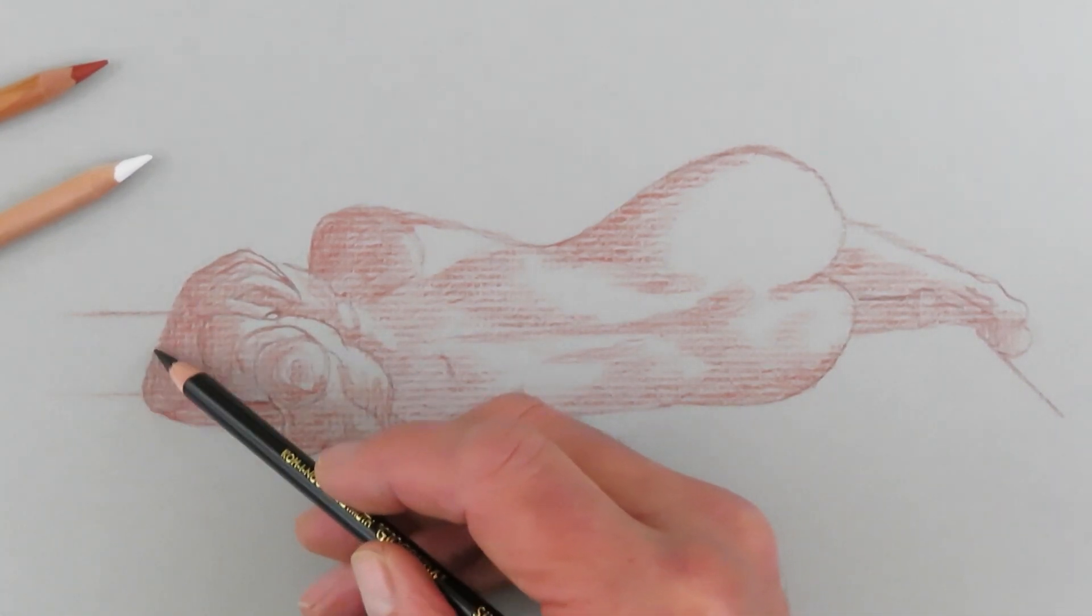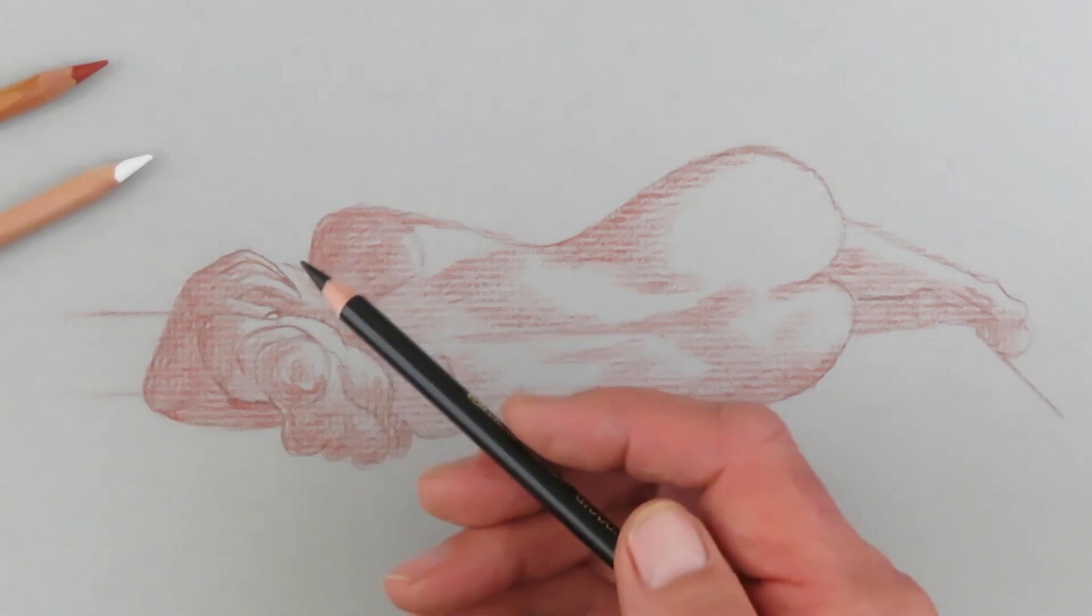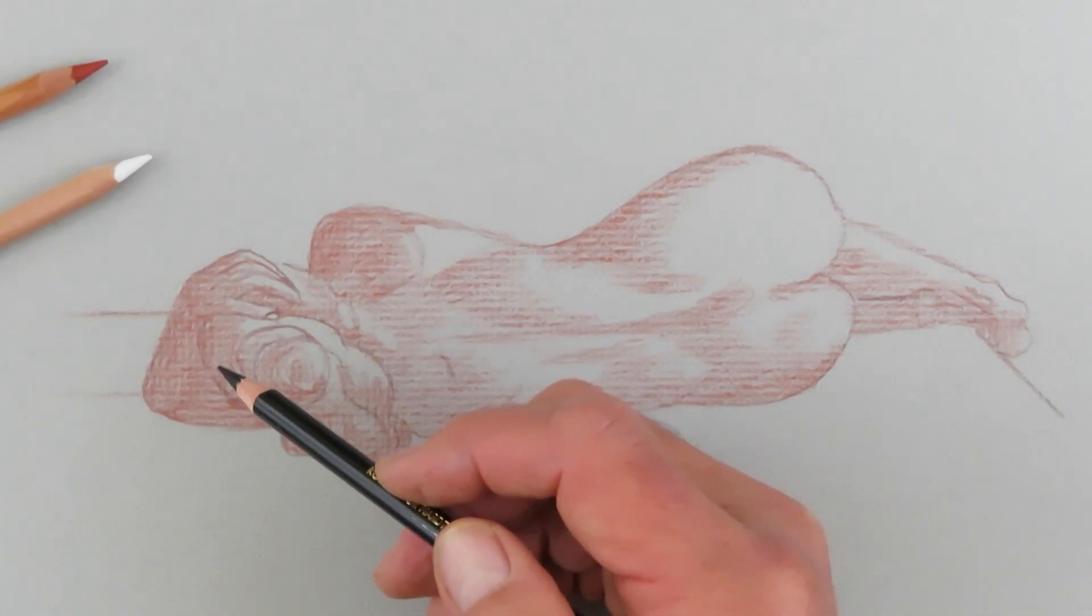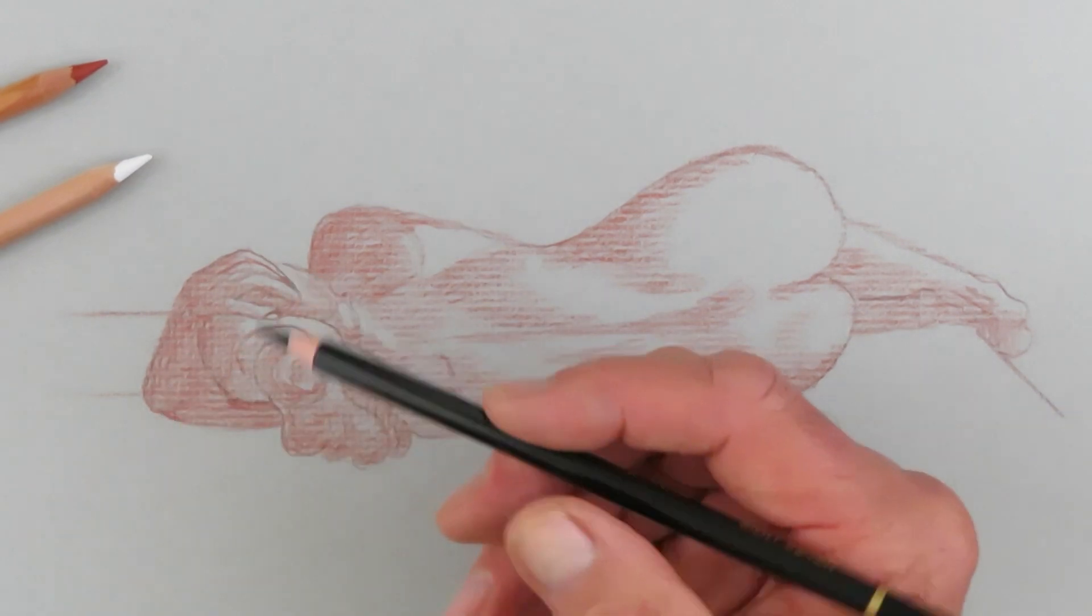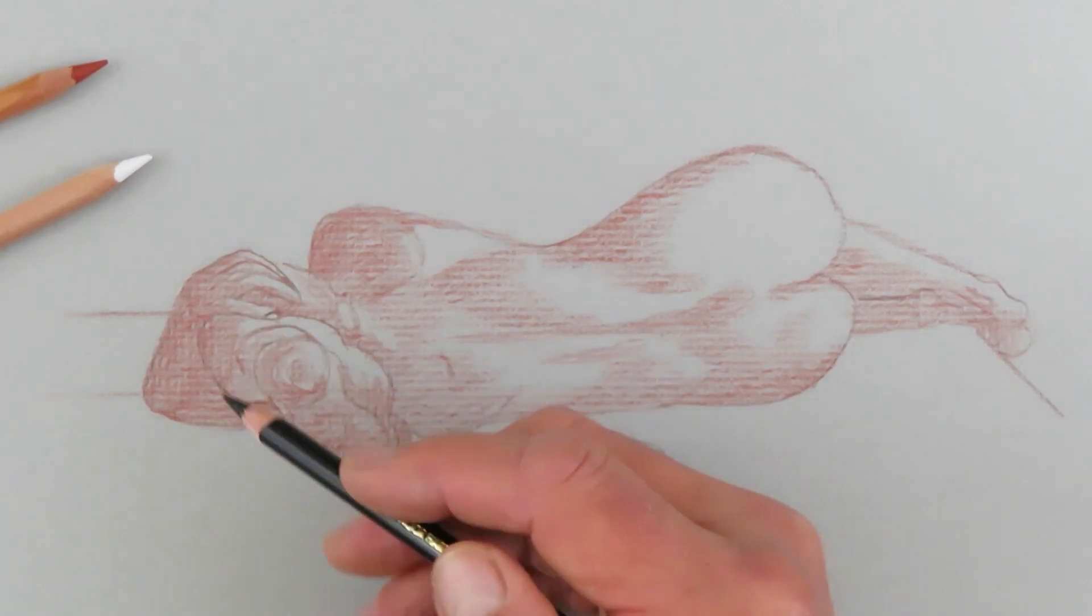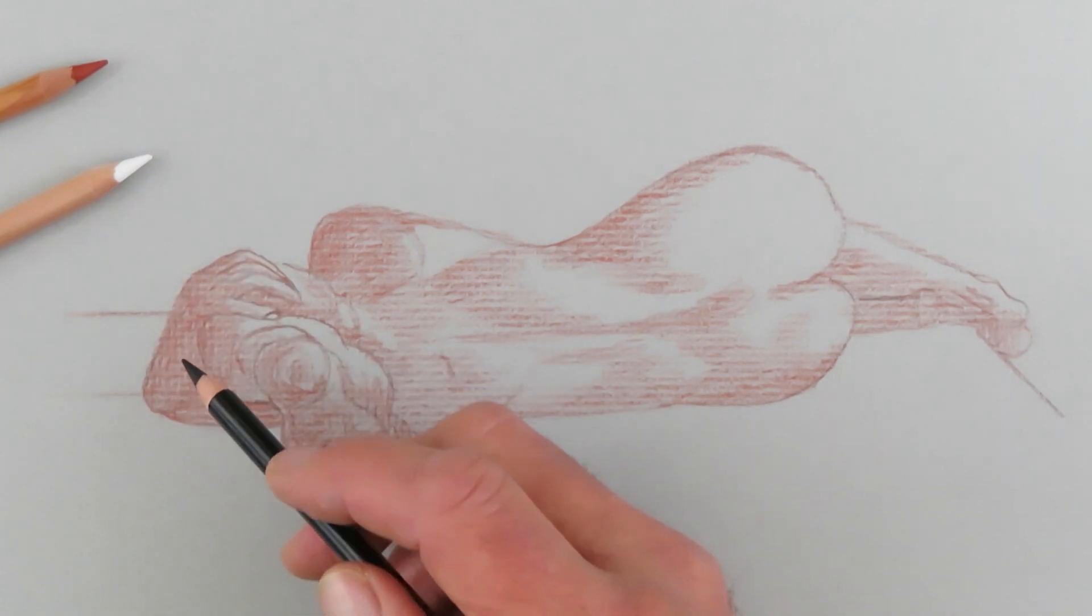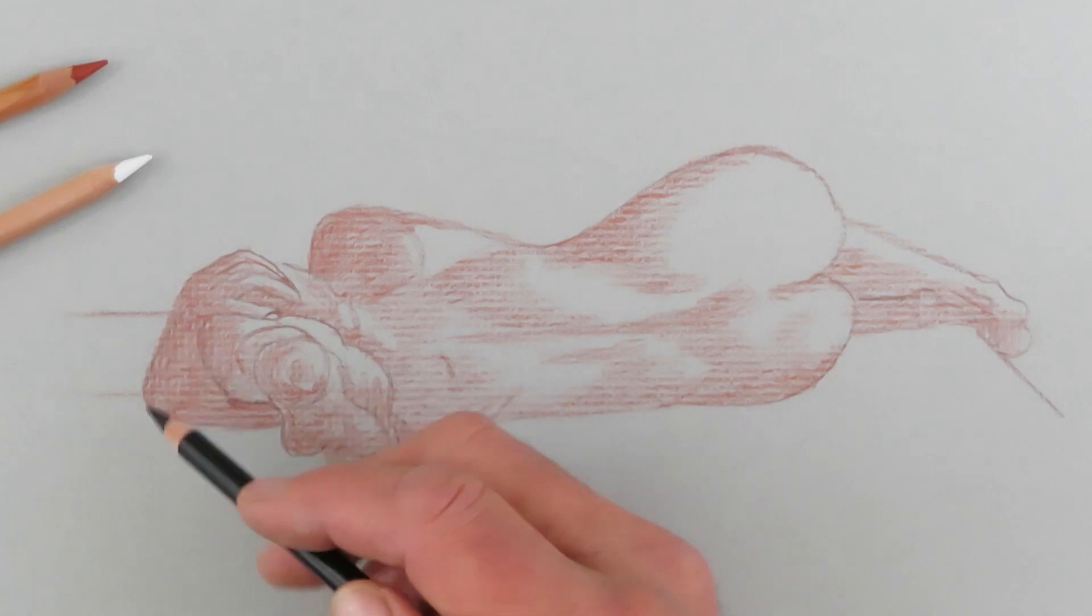And this works very well with the red chalk, because red chalk has a little bit of wax in it. And the carbon pencil is harder than charcoal, so it works very well with the red chalk and will give us the same results in giving us a nice dark area.